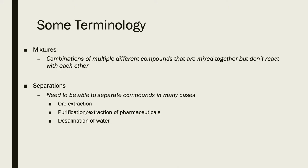Likewise, desalination of water — taking salt water and making it drinkable or usable for other purposes — all of these are different examples of trying to do separations. One of the things we're going to focus on in this lab is what types of properties are used to do these separations, because you're almost always going to exploit some sort of physical or chemical property of the substances you're trying to separate, and basically exploit the differences that the different compounds have in some of those properties.